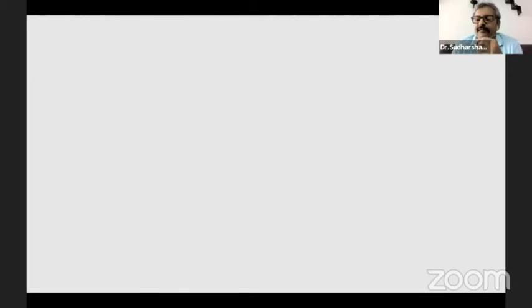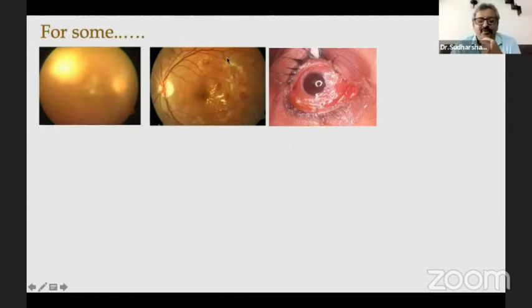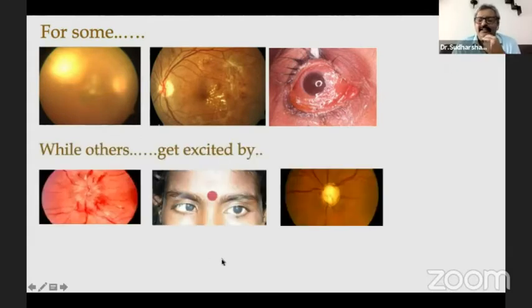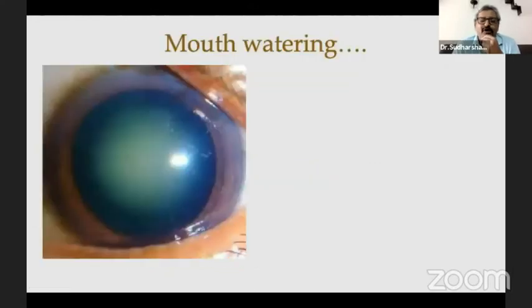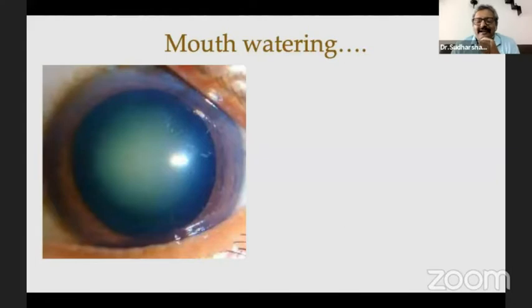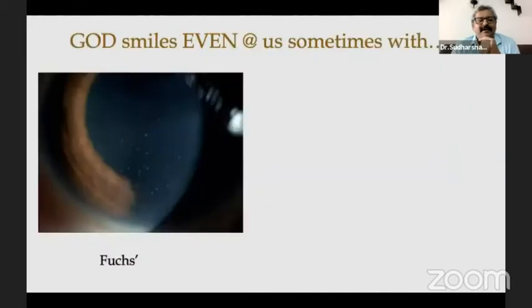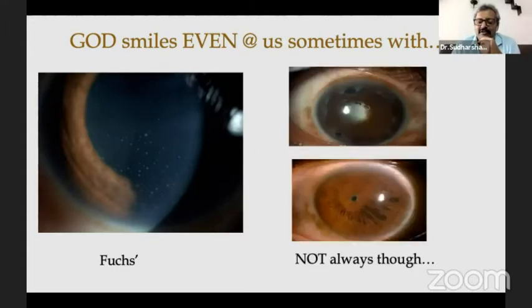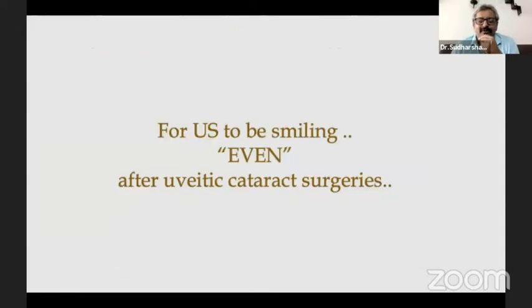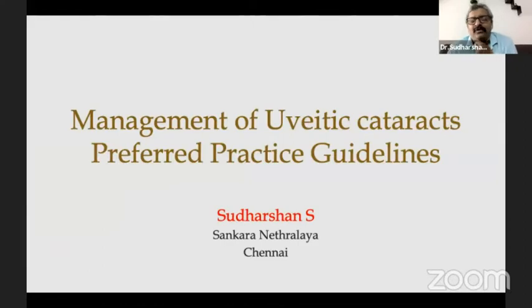For uveitic cataract surgeries, it's better we follow some preferred practice guidelines. The challenges in the management of uveitic cataracts include control of inflammation preoperatively, ensuring the systemic status is controlled. Intraoperatively, the cornea can have band keratopathy, pupils may have posterior synechiae, and irides can bleed. The most important thing in preoperative assessment: make sure that cataract is also contributing to vision loss, use PAM, ultrasound, and UBM. Ensure physician fitness is taken. The most important preoperative management is disease activity — it is important to have at least two to three months of inflammation-free period.